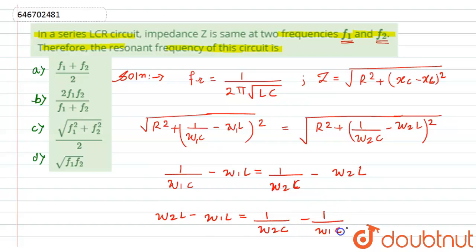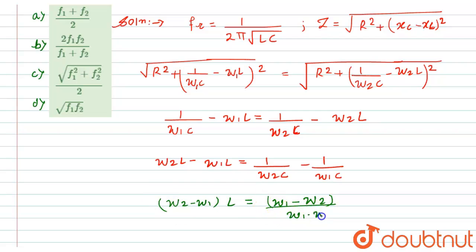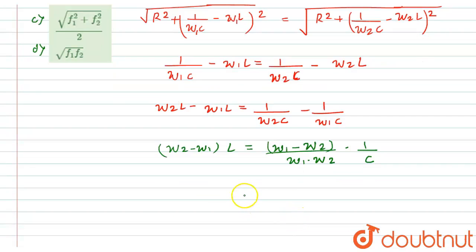Taking l as common on the left: (ω₂ − ω₁)·l = (ω₁ − ω₂)/(ω₁·ω₂·c). Taking minus sign as common on the right, (ω₂ − ω₁) cancels from both sides, giving l = −1/(ω₁·ω₂·c).